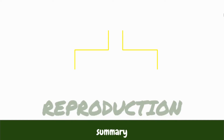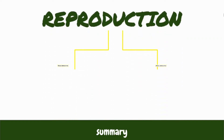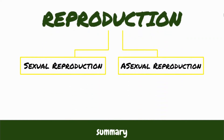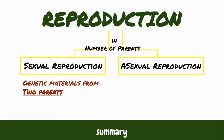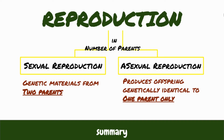Now, let's wrap things up. Organisms reproduce either sexually or asexually. The main difference between sexual and asexual reproduction is the number of parents. Sexual reproduction means combining genetic material from two parents, while asexual reproduction produces offspring genetically identical to one parent only.